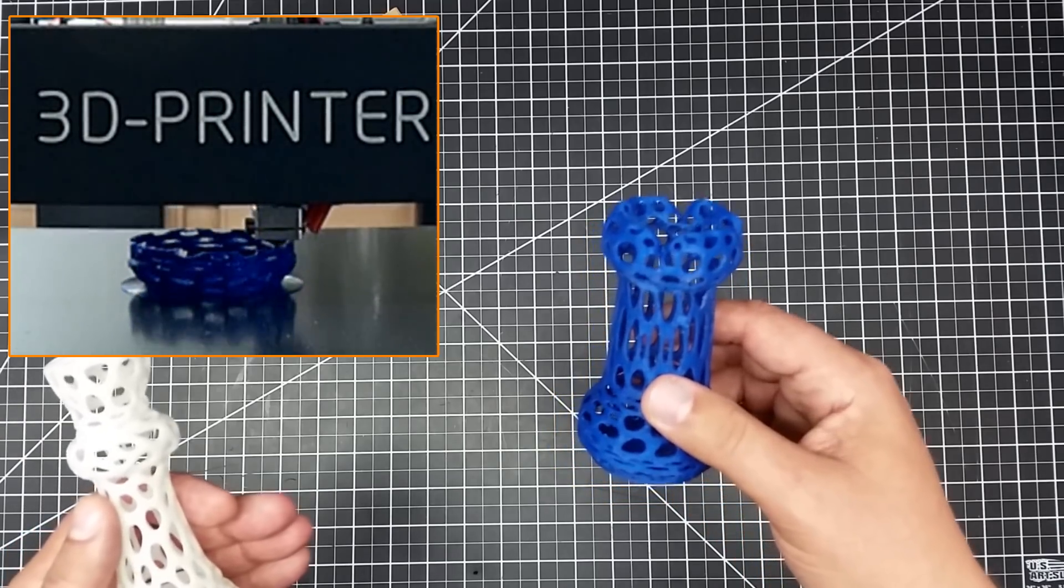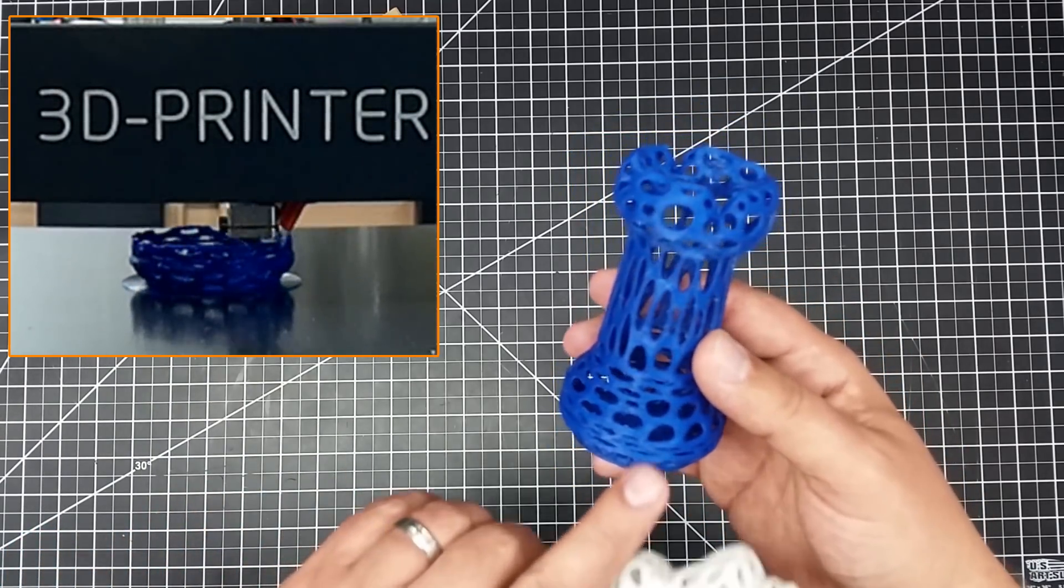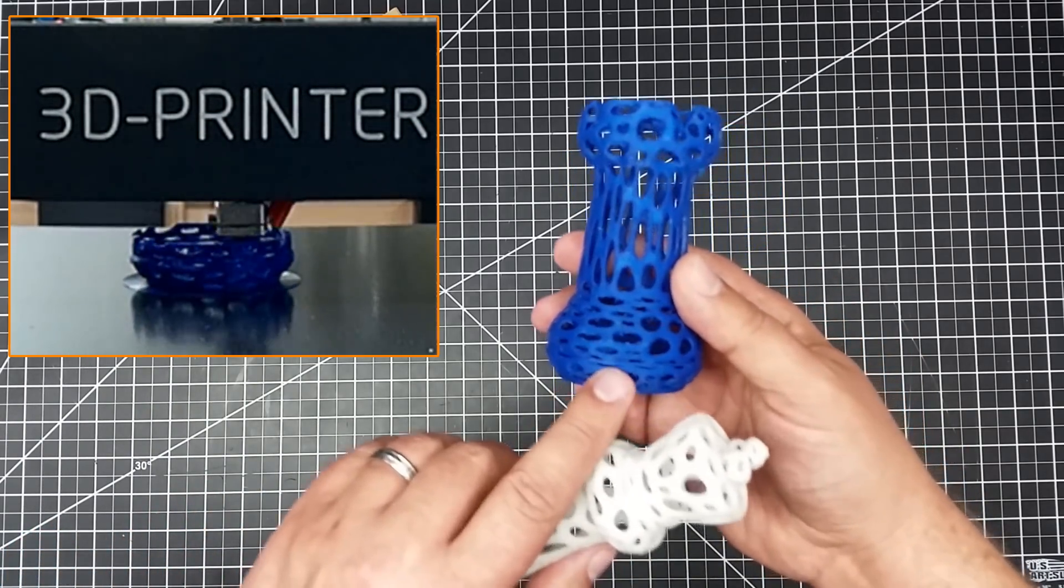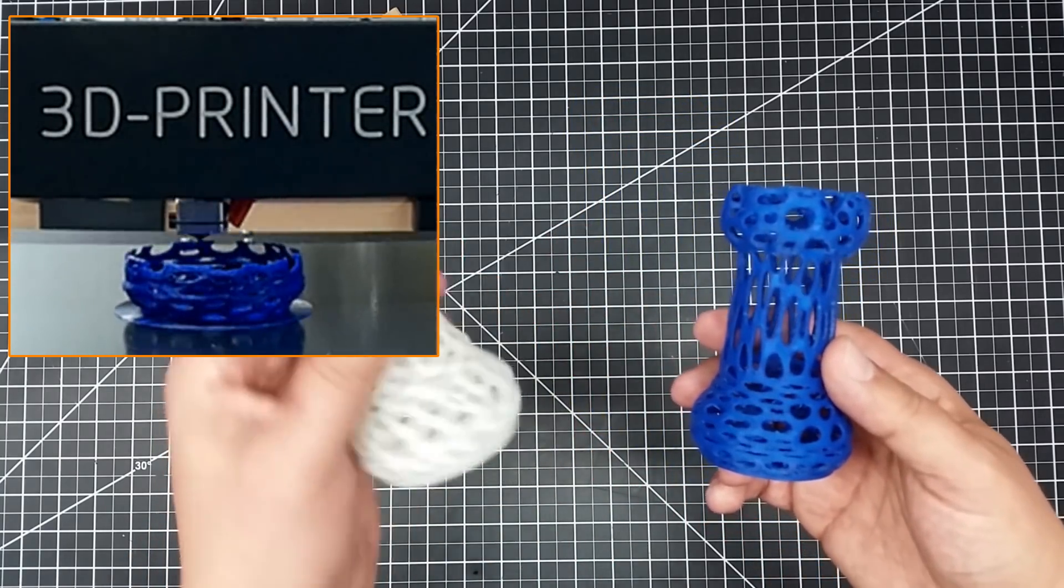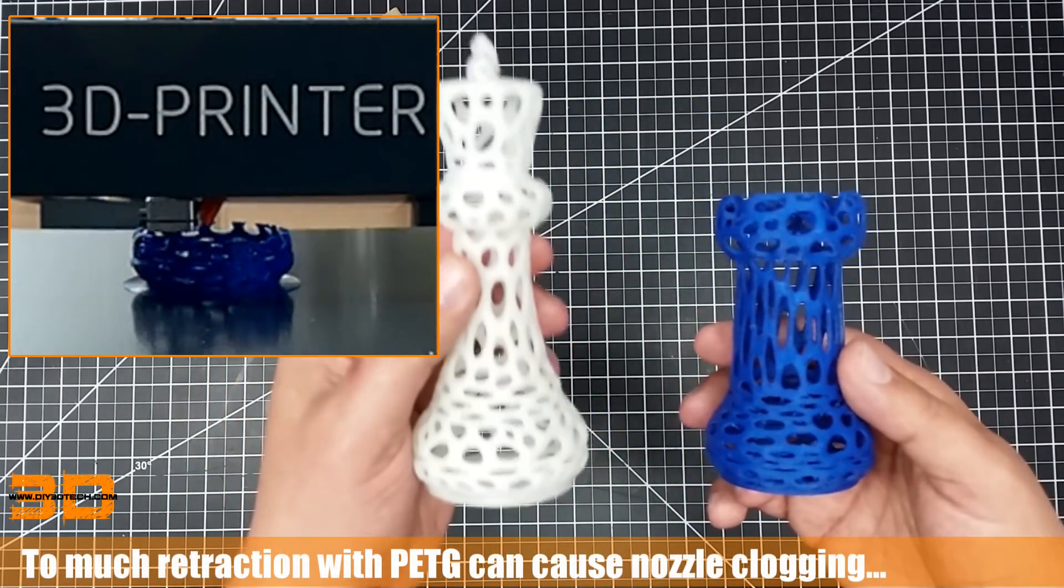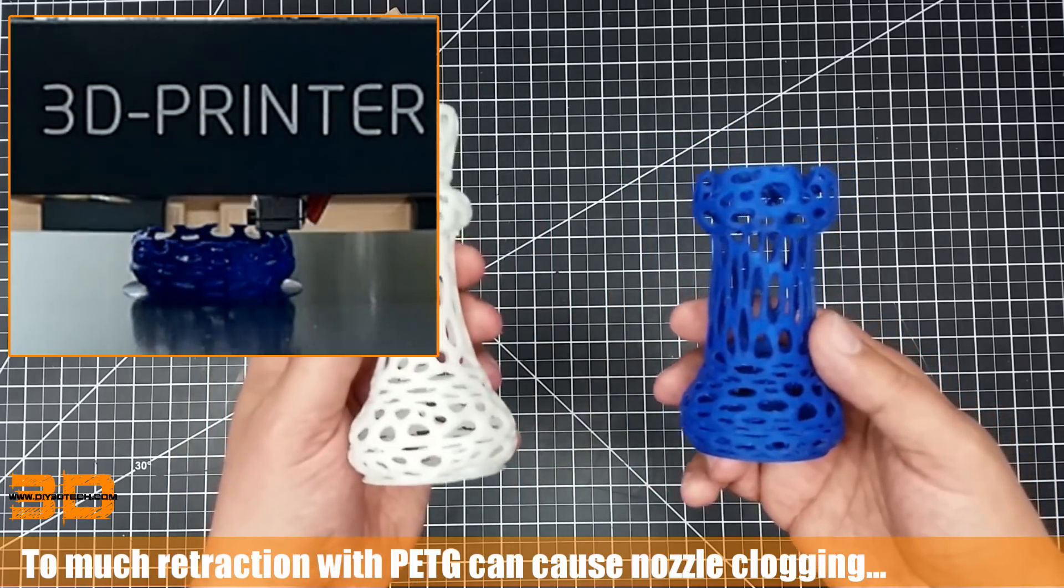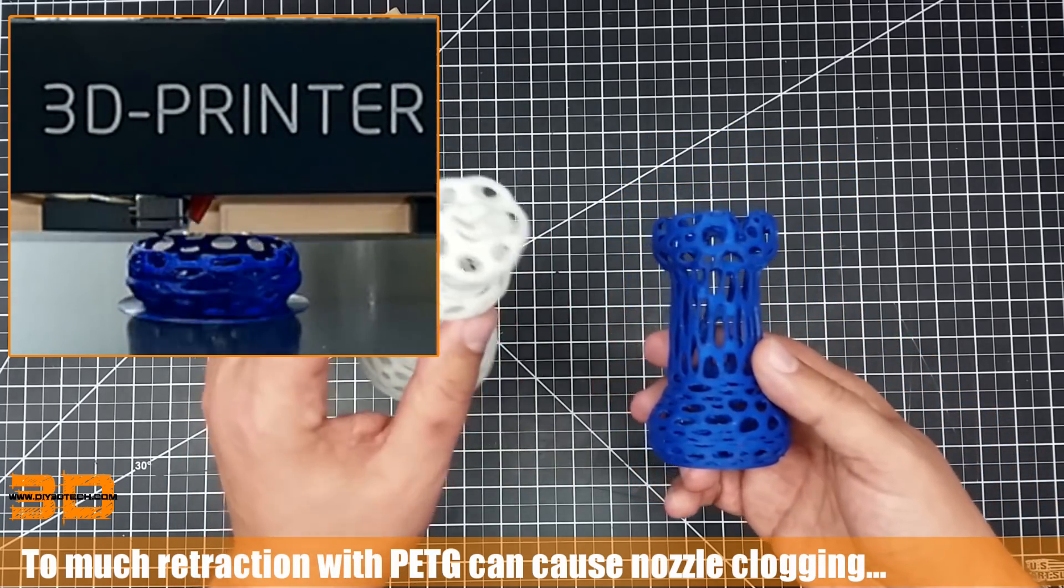Now, I didn't get too aggressive with the retraction. So you'll see some little bit of stringing down here in the bottom. And for reference, I've got the PLA version of a similar chess set that I printed also on the JG Aurora in PLA.